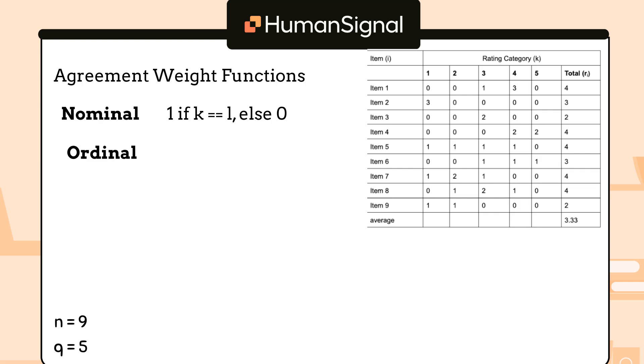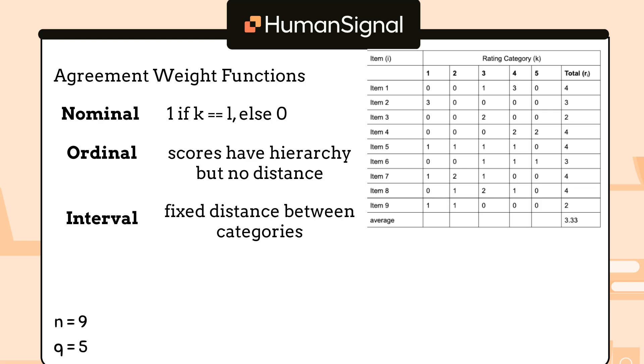Ordinal scores have a hierarchy. In this case, 5 is greater than 4, which is greater than 3, which is greater than 2, which is greater than 1. But there's no relative degree of difference. In this case, we could not make the claim that the difference between 4 and 5 is half the difference between 3 and 5. This is a pretty complicated weight function. Finally, interval scores have a fixed difference between categories. In this case, we could make the claim that 4 and 5 are half as far apart as 3 and 5. This uses a quadratic weight function. For simplicity's sake, we'll choose nominal scores for this example.